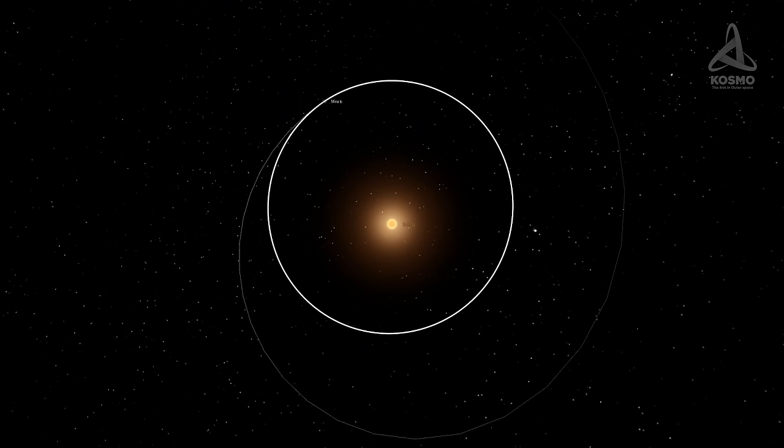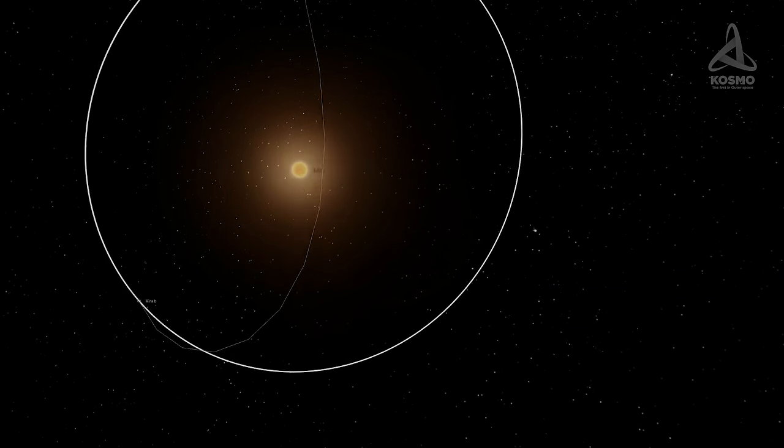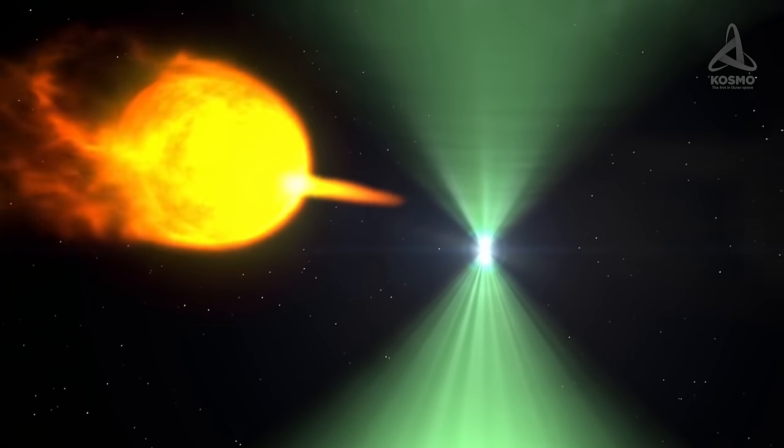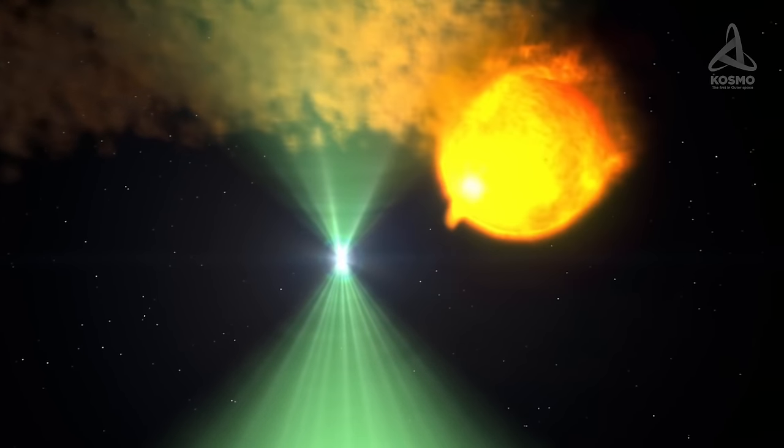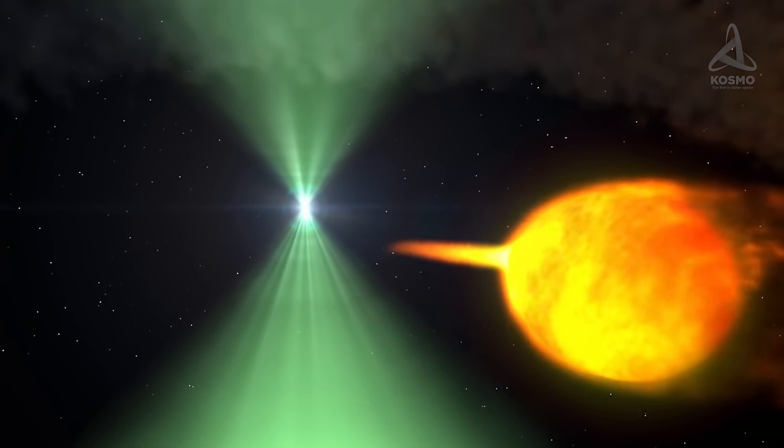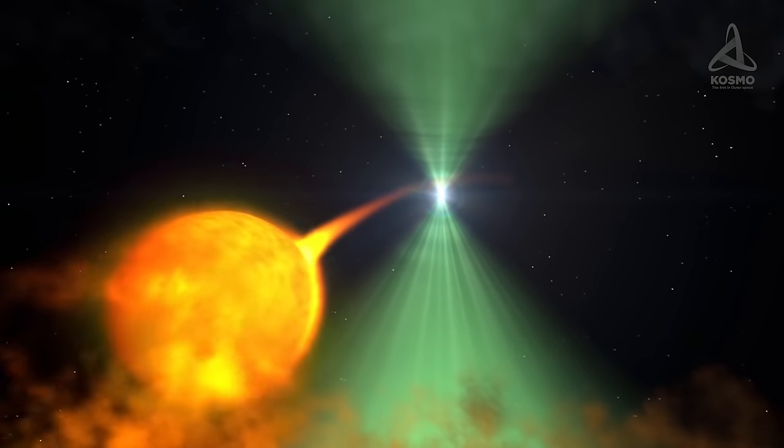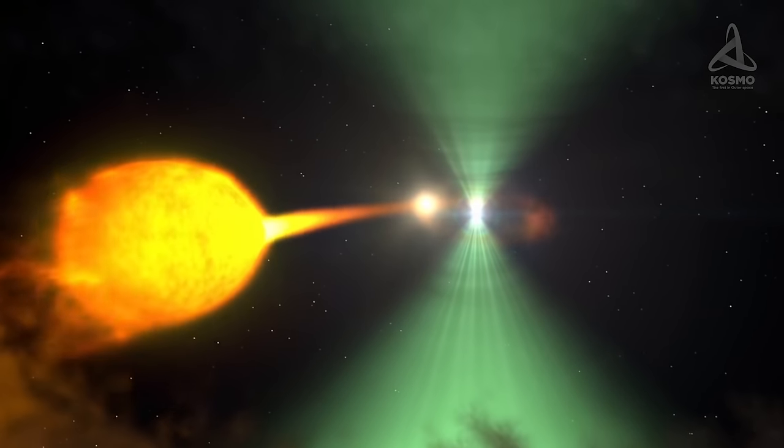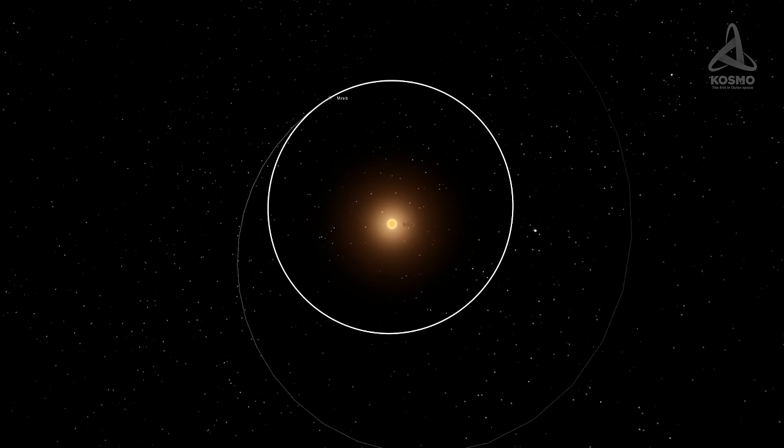As for the second component, Myra B, it is a white dwarf already. As this object is located close to Myra A by space standards, it attracts material dumped from the outer layers of the red giant. In this manner, a hot accretion disk was formed around Myra B, and since matter is shed onto it at irregular intervals, Myra B is a variable star too. Its apparent magnitude fluctuates between 9.5 and 12. Thus, both components in the system are variable stars, or variables.